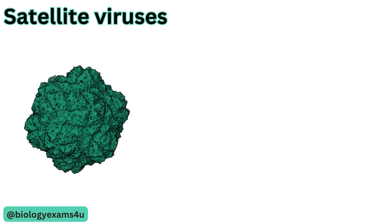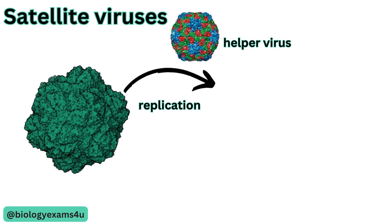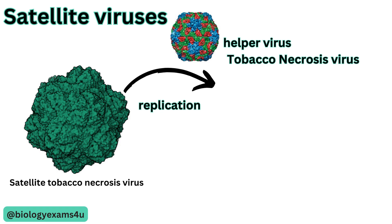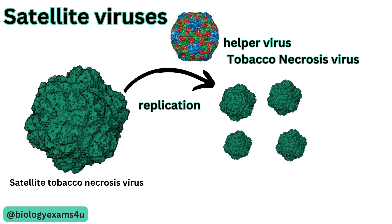Satellite viruses are subviral pathogens entirely dependent upon the replication machinery of their helper viruses. They contain a nucleic acid genome that encodes a structural protein which encapsulates the satellite genome. Satellite viruses have been characterized in animals, plants, and protists. An example is the satellite tobacco necrosis virus, which encodes a capsid protein forming an icosahedral capsid that packages only the satellite RNA. The helper virus, tobacco necrosis virus, encodes an RNA polymerase that replicates its own genome and that of the satellite.